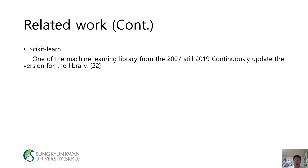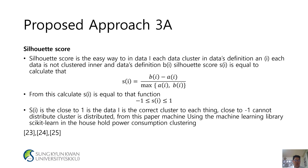Related Work continued: One of the machine learning libraries, from 2007 to 2019, continuously updates its version. Profile of Project 3A — Silhouette Score: Silhouette score is an easy way to define in-data cluster membership. The silhouette score Si is calculated as Si = (bi - ai) / max(ai, bi). Si close to 1 means data i is in the correct cluster; close to -1 means the cluster is incorrectly distributed. Machine learning library scikit-learn is used for household power consumption clustering.